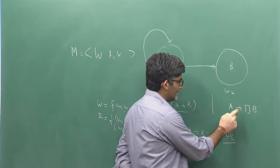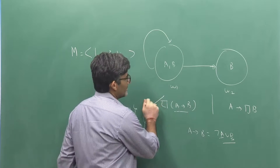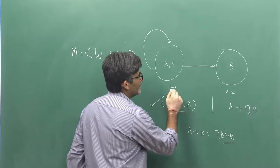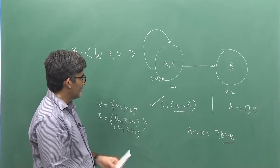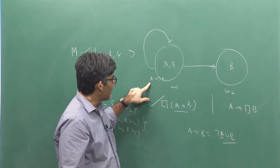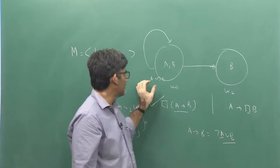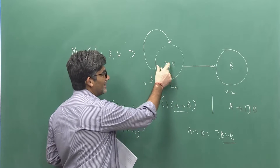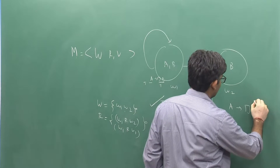Now coming back to A implies necessity of B. We are evaluating A implies necessity of B in W1. A is already true there, and B is true in W1 and also in W2 — so necessity of B is also true. Therefore this formula A implies necessity of B is true in W1. In both cases it holds.